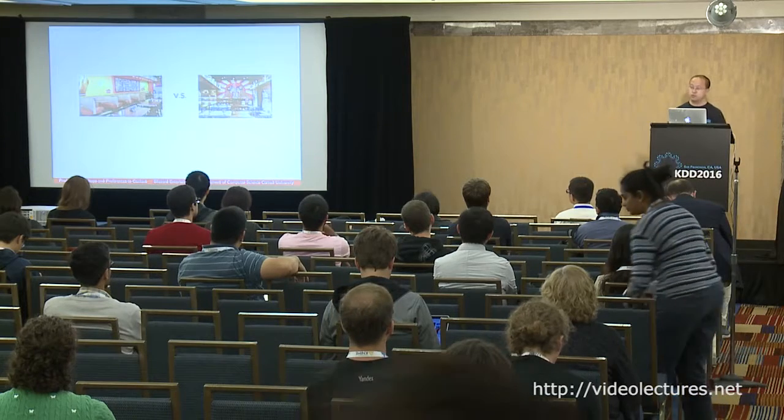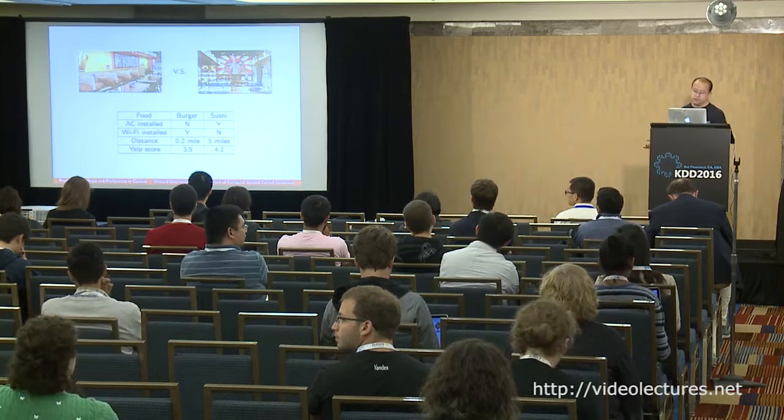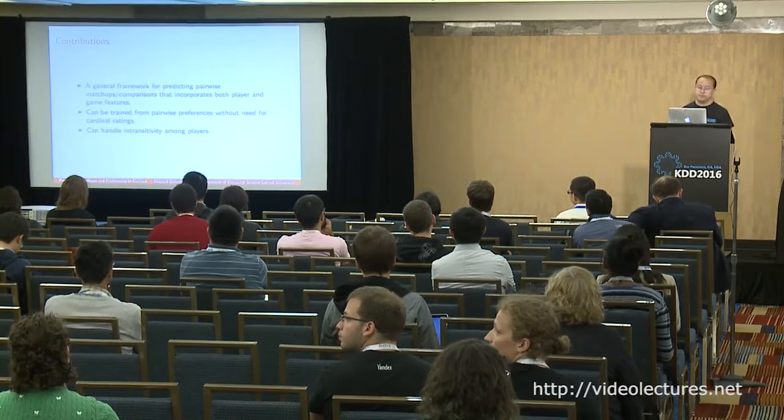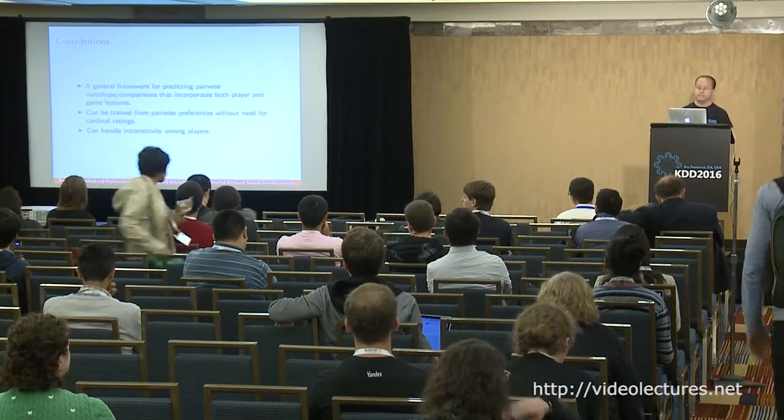This player feature / game feature breakdown also arises in other pairwise comparison scenarios. For example, if I want to pick one of two restaurants to go to, which one should I prefer? There are player features for the two restaurants — what food do they serve, do they have AC or Wi-Fi, how far away are they, what are their Yelp scores — and there are game features that are the same for both: am I going for breakfast, lunch, or dinner? How hungry am I? Am I going by myself or with friends? In our work, we propose a general framework for predicting pairwise matchups incorporating both player and game features, trained from pairwise preferences without any cardinal ratings.